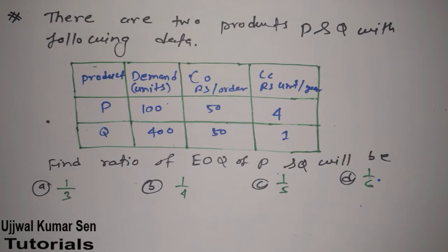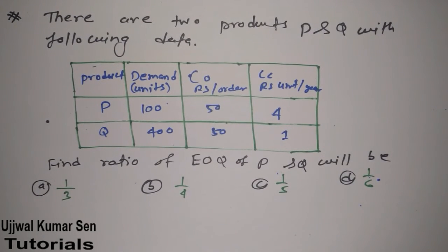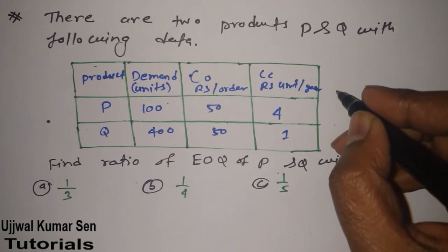product P and product Q. So we have to find out EOQ for product P and EOQ for product Q, then we have to find out ratio. I have already shared with you a question which was already asked in a GATE previous year and how to find out EOQ.